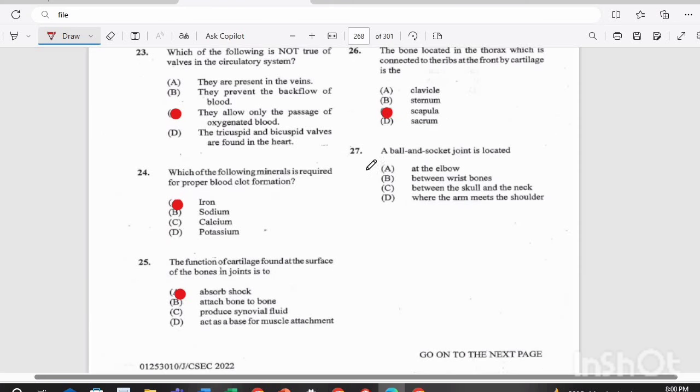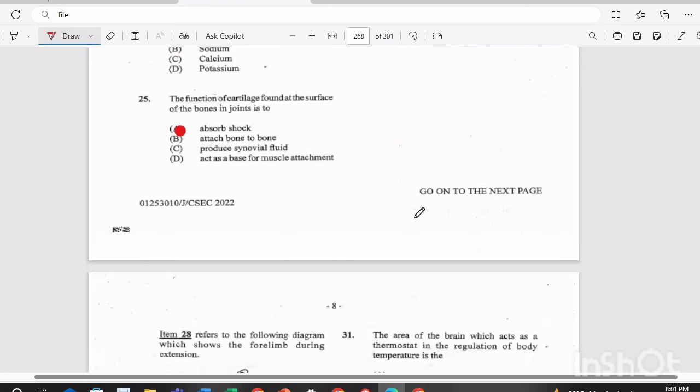Question 27. A ball and socket joint is located A, at the elbow, B, between your wrist bones, C, between the skull and the neck, or D, where the arm meets the shoulder? And if you remember what a ball and socket looks like, answer is D, where the arm meets the shoulder.